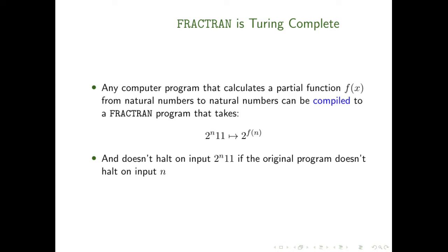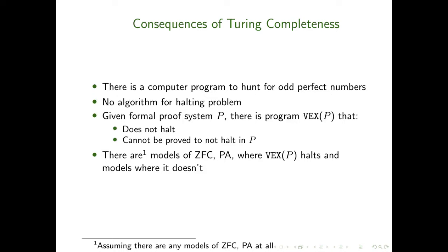Fractran is very much like an assembly language and the process of translating a computer program into Fractran is similar to compiling. Our program can be compiled to a Fractran program that takes numbers of the form 2^n times 11 to numbers of the form 2^f(n), and doesn't halt if the original program doesn't halt on input n. The fact that Fractran is Turing complete has a number of really difficult consequences.